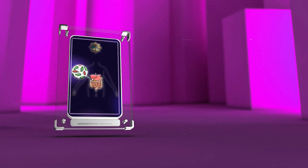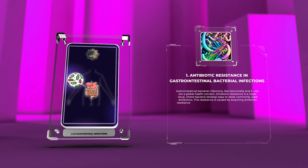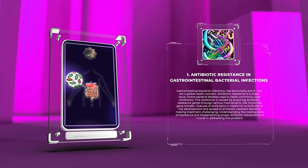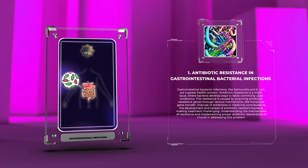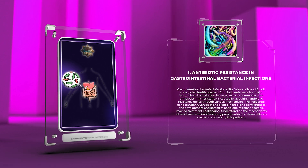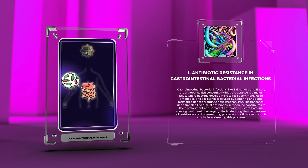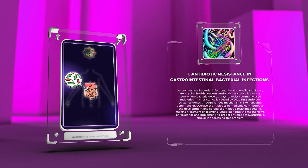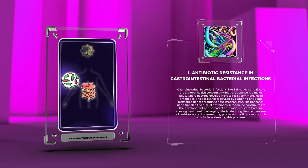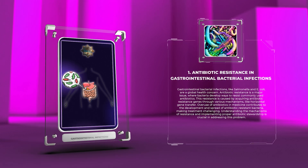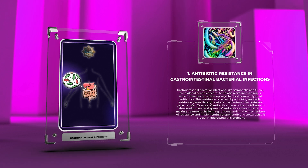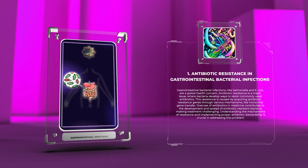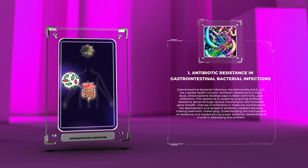Gastrointestinal bacterial infections, like Salmonella and E. coli, are a global health concern. Antibiotic resistance is a major issue, where bacteria develop ways to resist commonly used antibiotics. This resistance is caused by acquiring antibiotic resistance genes through mechanisms like horizontal gene transfer. Overuse of antibiotics in medicine contributes to the development and spread of antibiotic-resistant bacteria, making treatment challenging. Understanding the mechanisms of resistance and implementing proper antibiotic stewardship is crucial in addressing this problem.